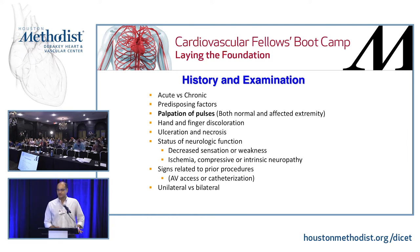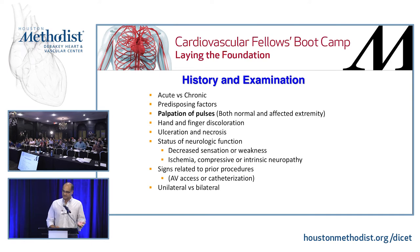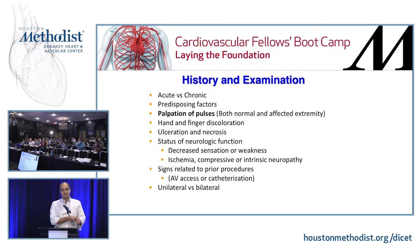History and physical should address acute versus chronic presentation and predisposing factors. Always palpate both the normal and abnormal extremity — a comparative exam is critical because sometimes absence of a pulse is normal for that patient bilaterally. Look for obvious discoloration, ulceration, and neurologic function, since neurologic symptoms appear before arterial or venous symptoms. Also note signs related to previous procedures like AV fistulas, catheterizations, or arterial lines.